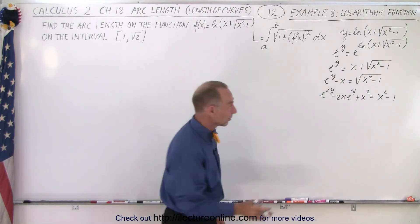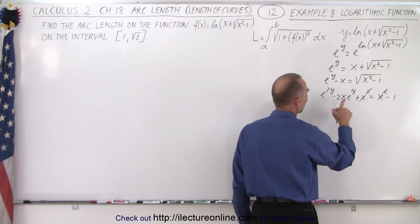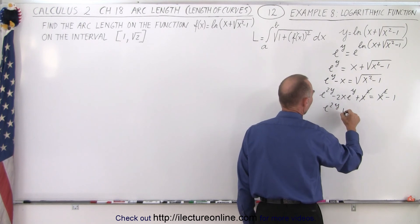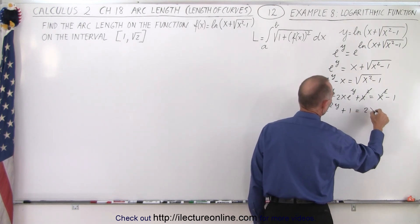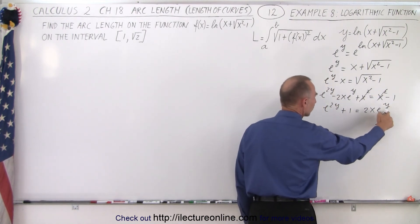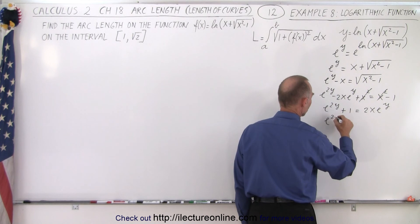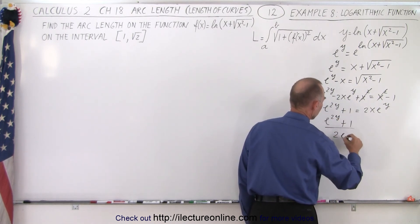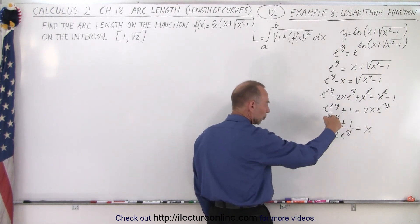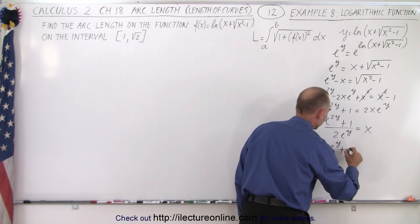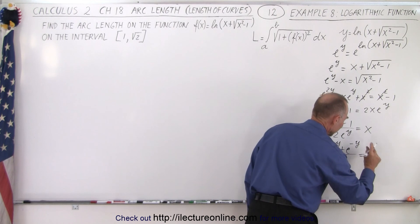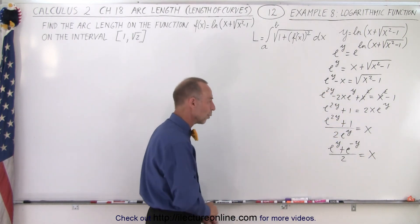The x squared terms cancel out. Now we want to isolate x. So this can be written as e to the 2y plus 1 equals 2x·eʸ, and then we divide both sides by 2eʸ, giving e to the 2y plus 1 divided by 2eʸ equals x. Dividing eʸ into the numerator, we get eʸ plus e to the negative y, all divided by 2, equals x. Now we have x as a function of y.